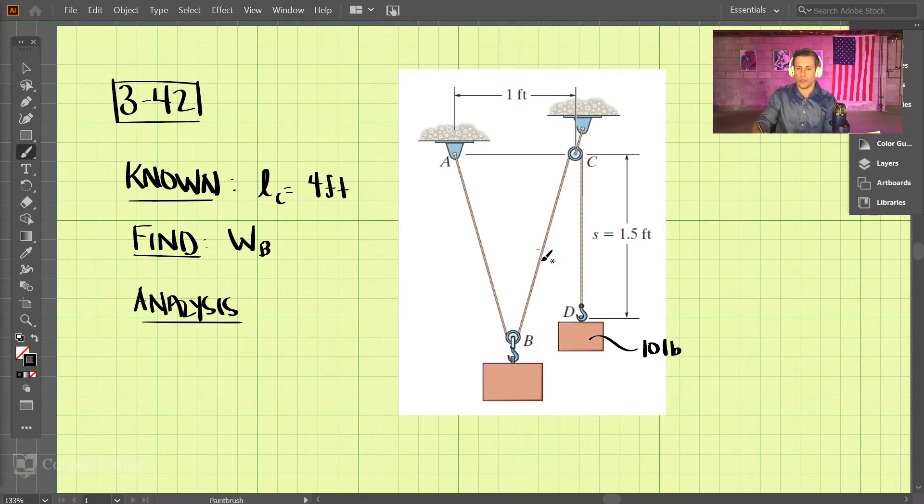Well, so we better go through some of the geometry first and figure that out. So if the full cord length is 4 feet, then we have the remaining cord length here is 4 minus 1.5. So that's 2.5. So this total cord length of this part is 2.5.